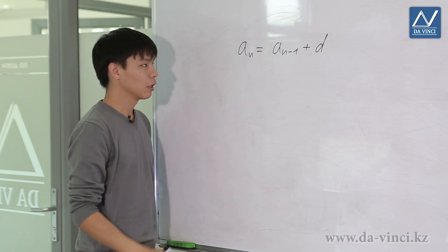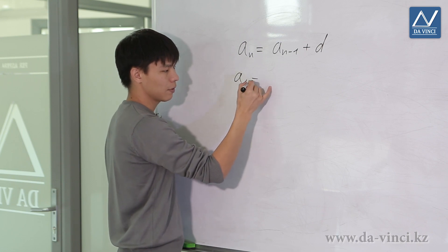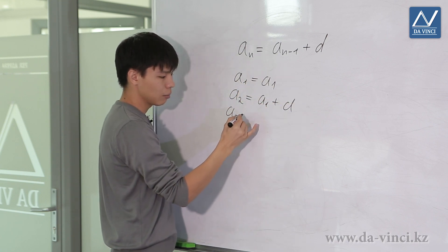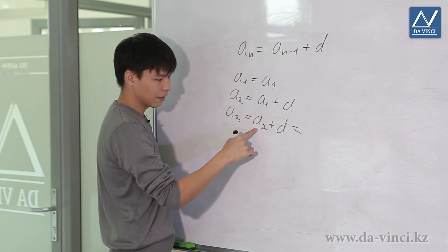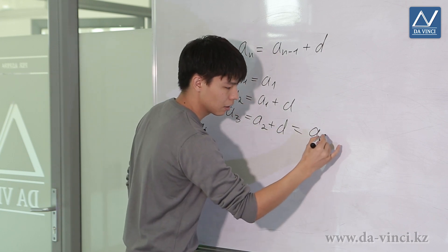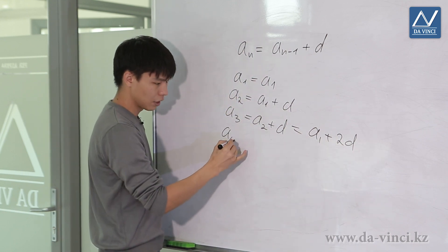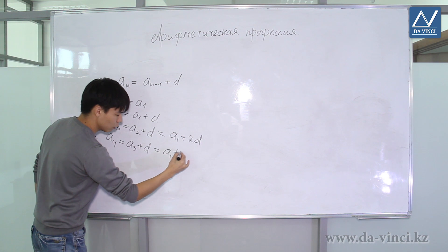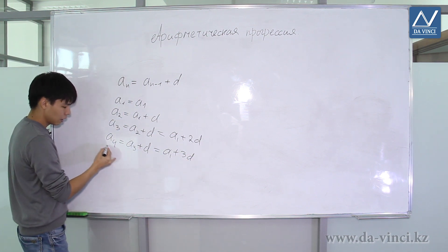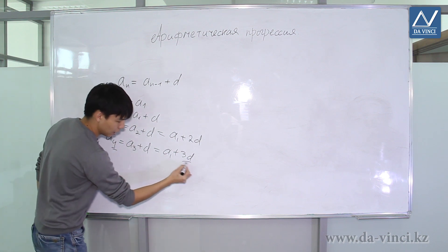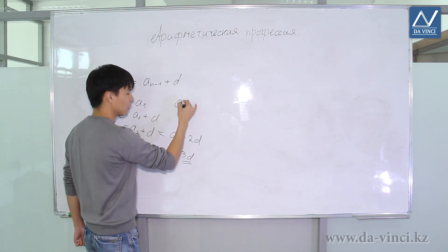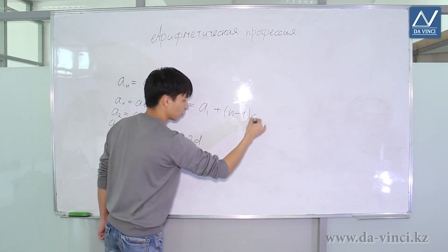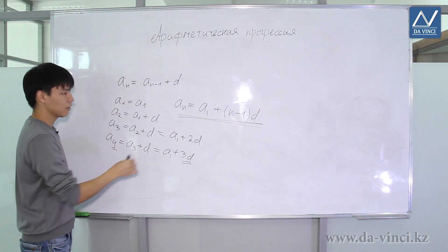Let's try to derive the analytical formula. We have: a1 equals a1; a2 equals a1 plus d; a3 equals a2 plus d, which after substitution gives a1 plus 2d; a4 equals a3 plus d, which gives a1 plus 3d. You have probably already noticed the regularity: a4 is obtained by adding a1 and 3d. From this, the formula is: an equals a1 plus (n minus 1) multiplied by d. This is called the formula of the nth term of an arithmetic progression.